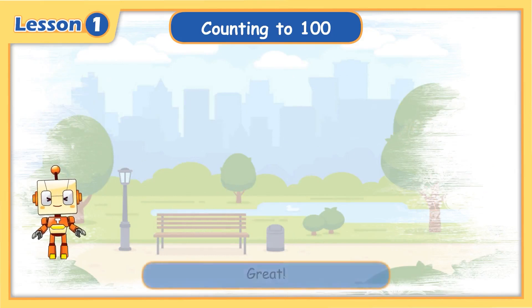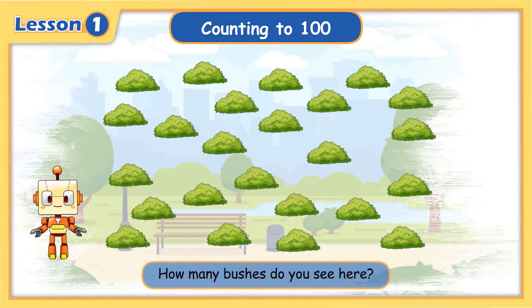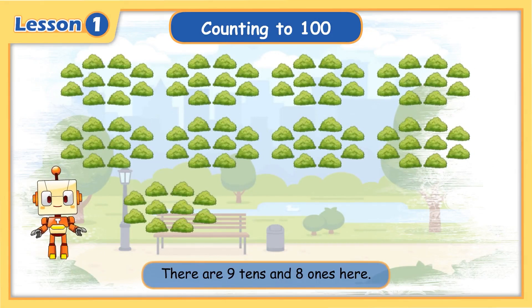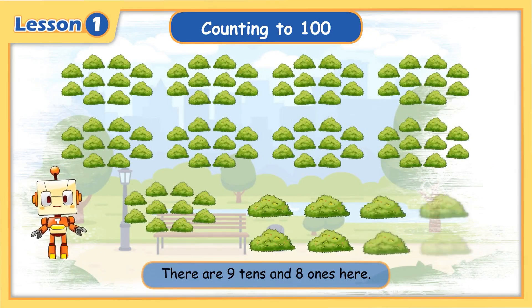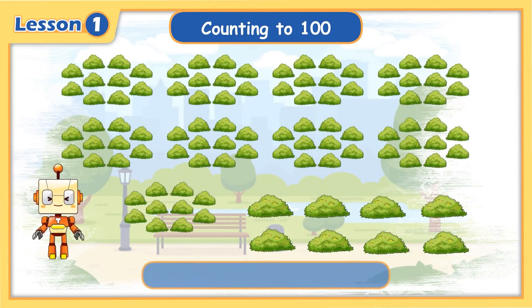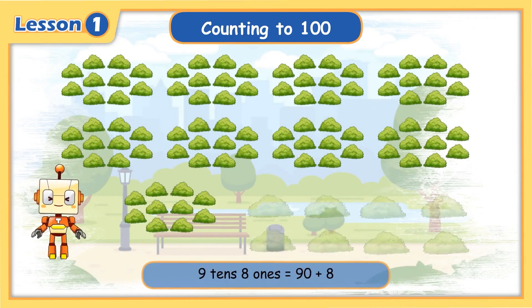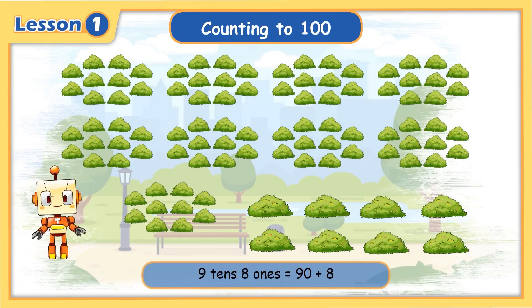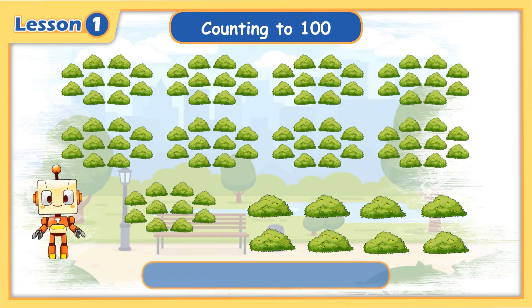Great! How many bushes do you see here? There are 9 tens and 8 ones here. 9 tens, 8 ones equals 90 plus 8 equals 98.